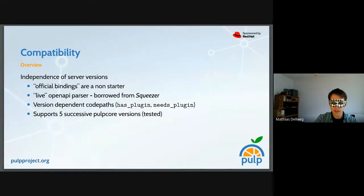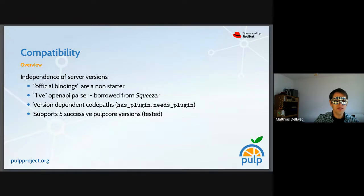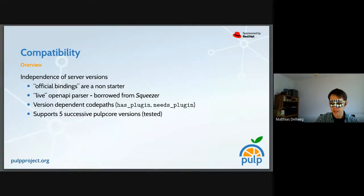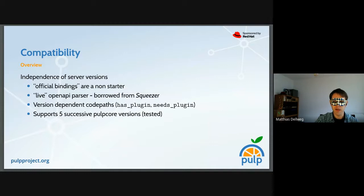Over time we collected a load of those workarounds, and at some point we decided to clean things up. In our CI, we already test five successive PULP Core versions with compatible plugins for each commit. We decided: what we can test is what we can support, and everything older than that we delete in the next release. This has been the policy ever since — we support five successive PULP Core versions in the CLI.